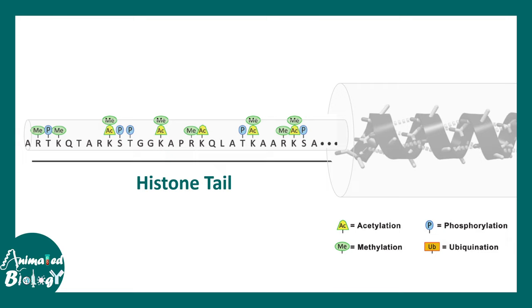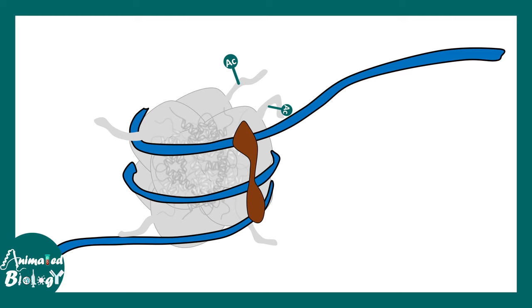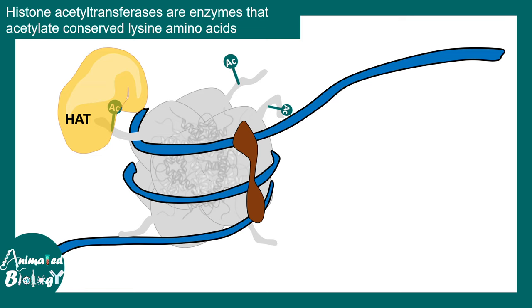Acetylation takes place in the lysine or arginine residue — most commonly in the lysine residues. Here you can see one segment of the nucleosome where the tails of the histones are acetylated. This acetylation is carried out by the enzyme histone acetyltransferase, which transfers the acetyl group from acetyl-CoA.